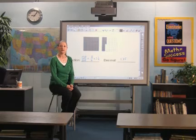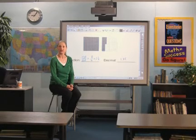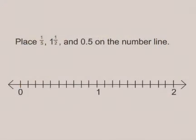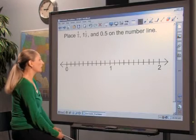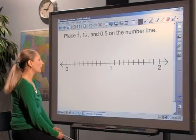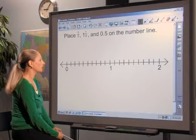Along with decimal grids and fraction squares, have students use another familiar model to represent equivalent rational numbers: the number line. Begin by having students place fractions, decimals, and mixed numbers on an unmarked number line, one on which just zero and one or two are marked.